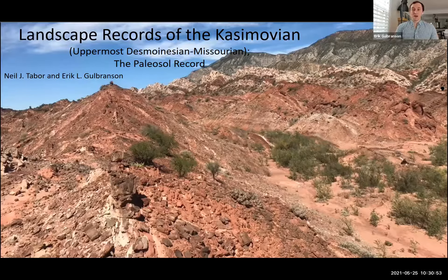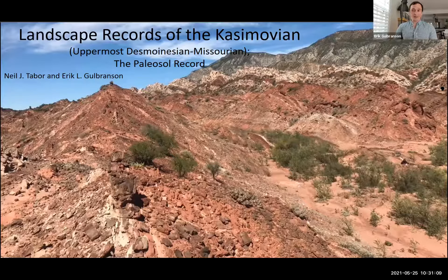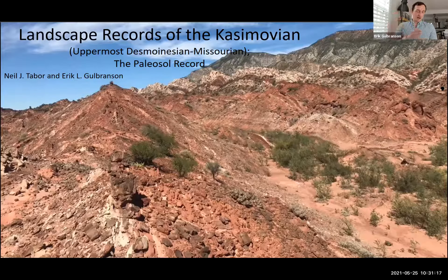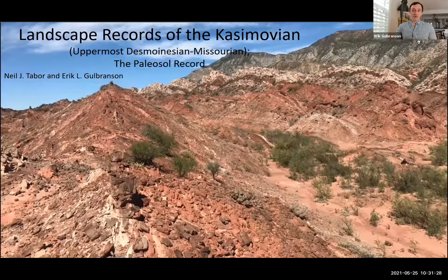This is what the Casimovian record looks like on Gondwana in northwestern Argentina in particular. What you're looking at here is one limb of an anticline near the village of Fuoco. You can see the Casimovian strata as these light tan beds on the far right, next to those red beds, grading continuously into the Assalian in the foreground. This is evidence of a non-glacial interval on this sector of Gondwana.